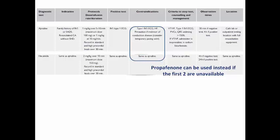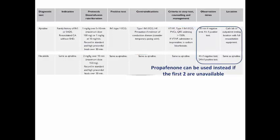Additional contraindications include heart failure, as sodium channel blockers cannot be given, and evidence of conduction disease where temporary pacing wire may be needed. Criteria to stop the test include development of VT, VF, type 1 Brugada pattern, or QRS widening more than 150%. If VT or VF occurs, intravenous isoproterenol or sodium bicarbonate should be available along with DC shock capability. Observation time for ajmaline is 30 minutes if negative and 4 hours if positive; for flecainide, 4 hours if negative and 24 hours if positive.